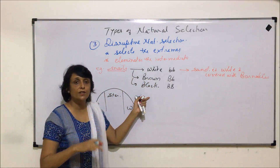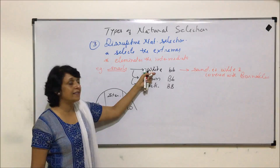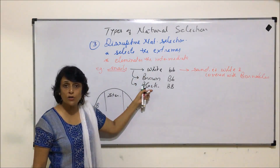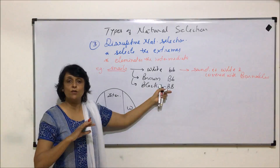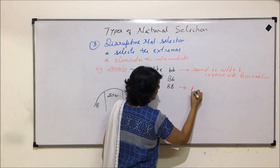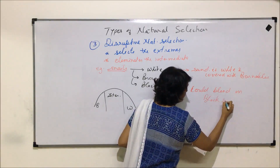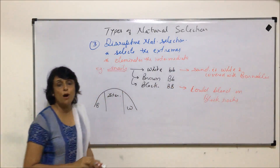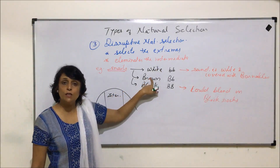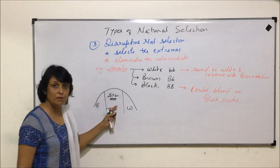The white snails blend into the white sandy seabed, and the black snails blend into the black rocks where they live. The brown intermediate snails, however, are easily detected — they are visible on the white background and also visible on the black background. This means the intermediate brown snails are not the most suited to survive.